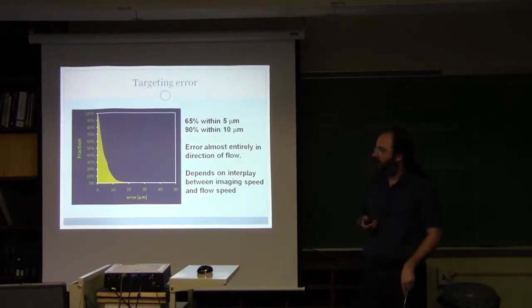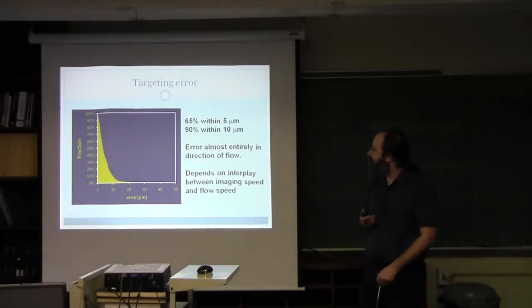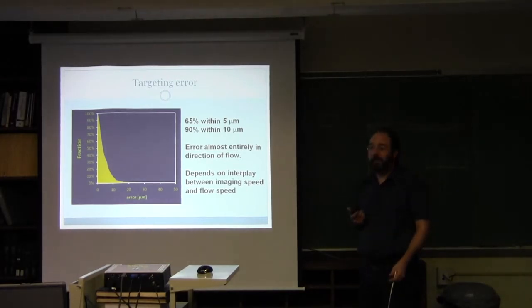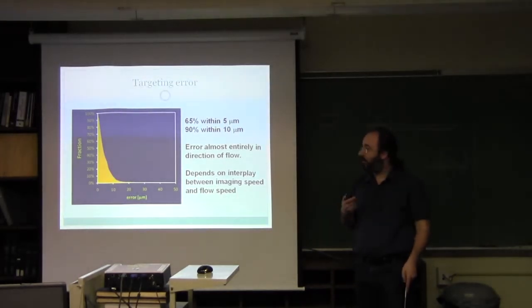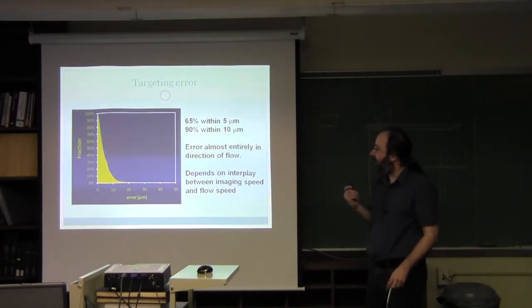What we've seen with this system is when we are taking beads flowing at that rate, at 30 frames per second imaging, we can guarantee that about two-thirds of the beads are targeted within a 5 micron precision, and the error is almost entirely in the direction of flow. So we can fix this by taking more pictures or flowing the cells or the beads slower.